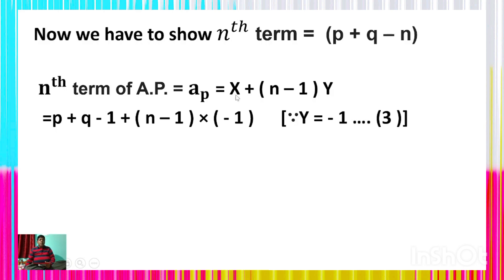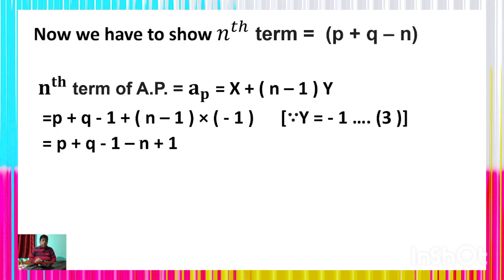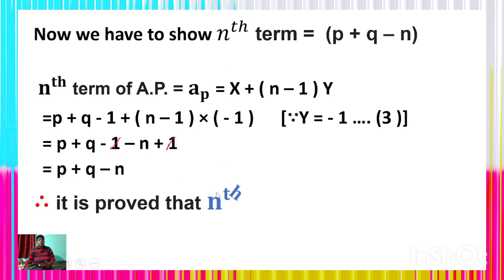In place of x write p + q − 1, and in place of y write −1: a_n = (p + q − 1) + (n−1)×(−1) = p + q − 1 − n + 1. The −1 and +1 cancel, giving a_n = p + q − n. Thus the nth term of the AP is p + q − n.